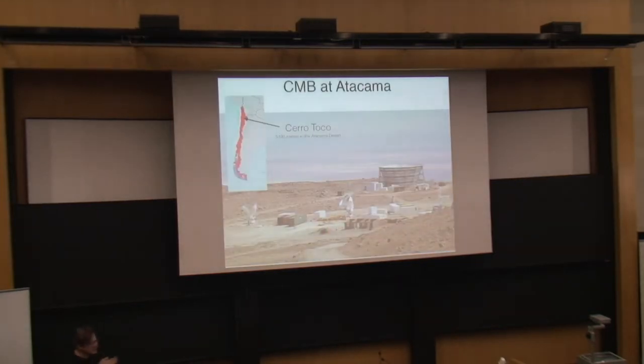This is a picture of the site which is used for CMB studies at the Atacama Plateau, up here 5200 meters above sea level. Back here is the ground screen surrounding the ACT telescope, and in the front are these three dishes from the Simons Array, which is the successor to POLARBEAR.